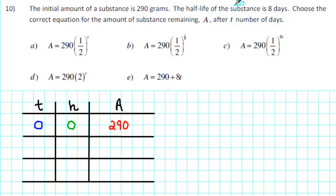Next, we're told that the half-life of the substance is 8 days. So we'll use 8 for our next value of T. 8 days is equivalent to 1 half-life. To determine the amount, we take half of 290, which is 145.